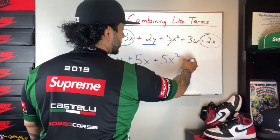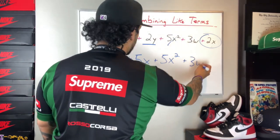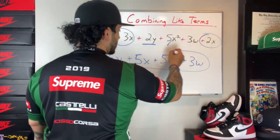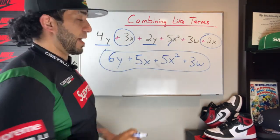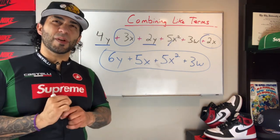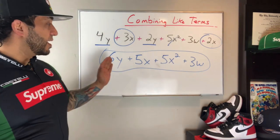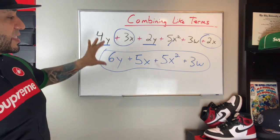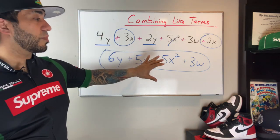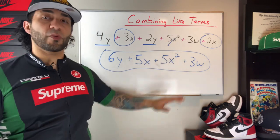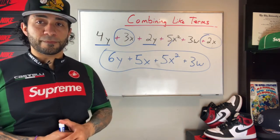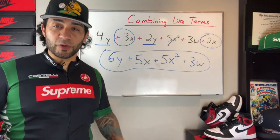And then I'm left with this 3w that's just hanging out on its own. This initial expression has been simplified to be 6y plus 5x plus 5x to the second power plus 3w. It cannot be simplified anymore. And that's how you combine like terms.